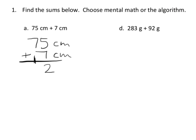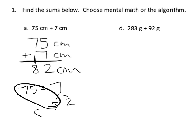The term 'standard algorithm' is a little tricky because putting the carry at the bottom isn't universally standard — but enough nitpicking. Seven tens plus one ten gives us eight tens, so the answer is 82 centimeters. For mental math, students may decompose the 7 into 5 and 2, getting 80 plus 2 equals 82.